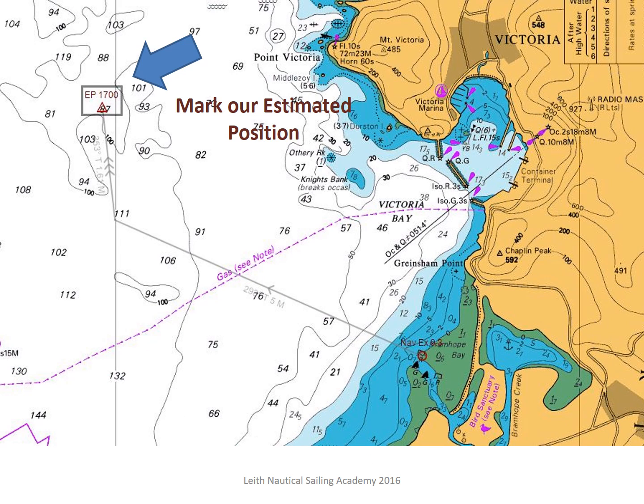We now mark our chart with the symbol for an estimated position. We put a dot and a triangle at the end of our tide line. This is the chart symbol we use for an estimated position.